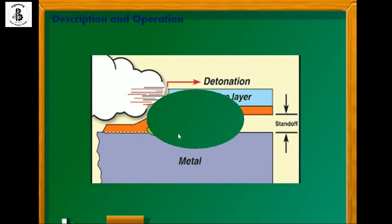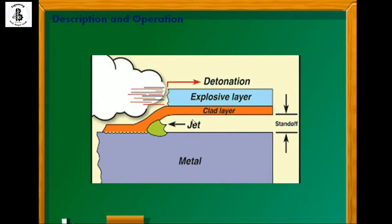In the description and operations, the base metal or target plate is placed with standoffs, and above that are the clad layers or flyer plates, with explosive and detonator on top. By the detonation, the explosive is burned and the clad material or flyer plate is fired towards the base metallic material. This application can also be used to perform cladding on sheet metals. The distance between the plates is known as the standoff distance.